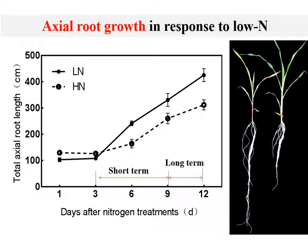However, if you look at the growth of axial roots in the gastric direction, you will always find an increase in root length, either in the short term or long term. Root elongation is a very important adaptive strategy for maize plants to find more nitrogen resources in the soil, because a longer axial root can expand the root-occupied soil space.